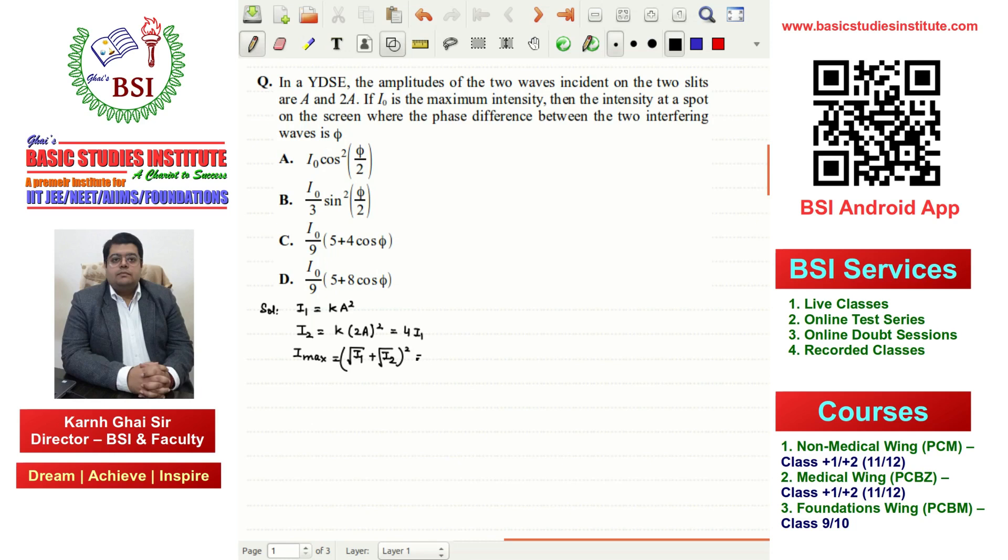If you fill in the values, you have √I1 plus √I2, which is √I1 plus √(4I1), and then its whole square.